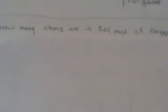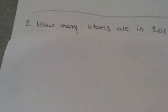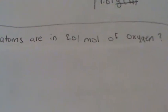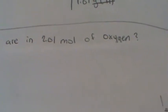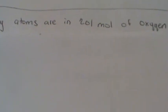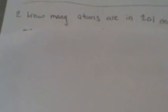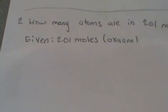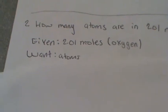So we will now move on to our second problem. How many atoms are in 2.01 moles of oxygen? Just like we did on our previous problem, we will put our given and our want. Our given is 2.01 moles of oxygen. Our want is atoms.